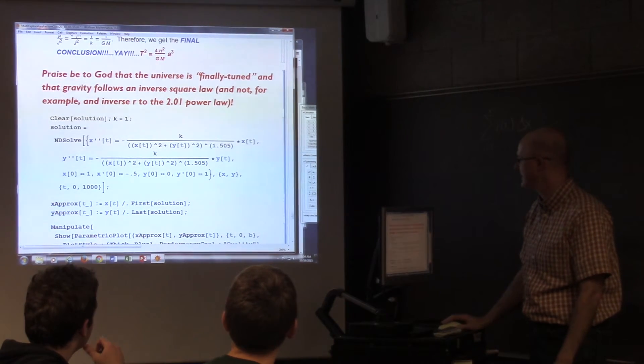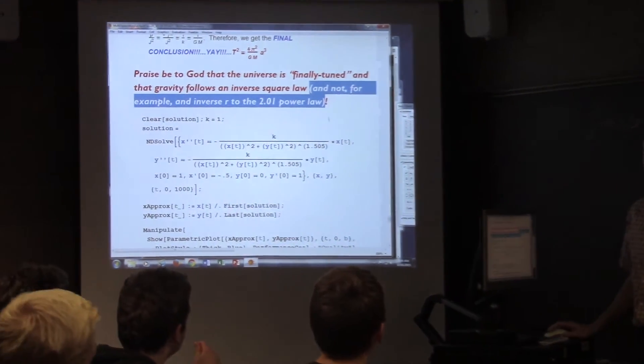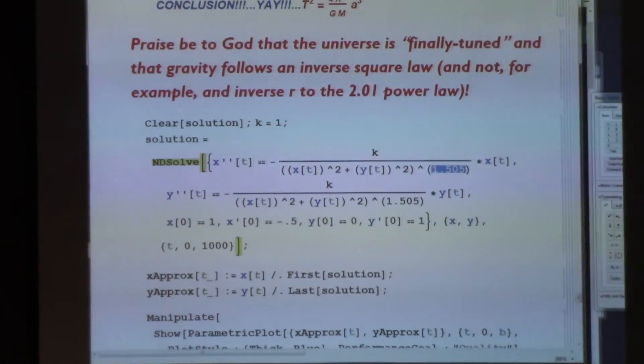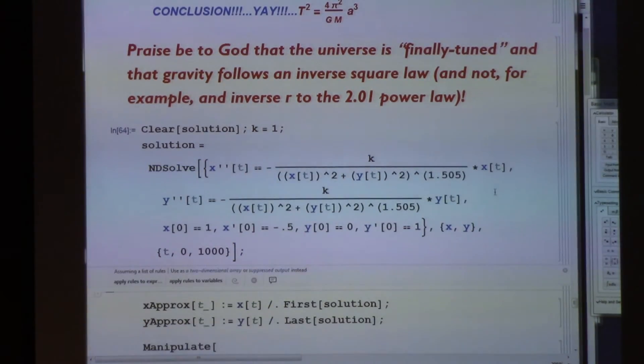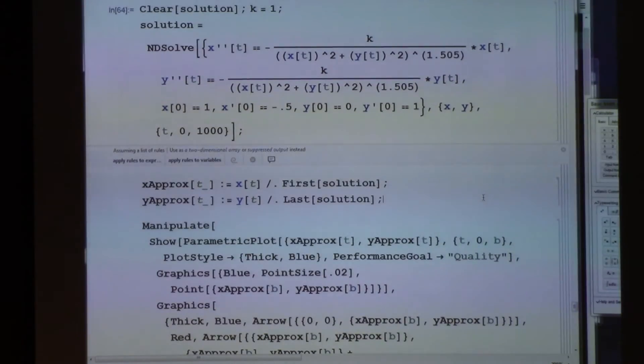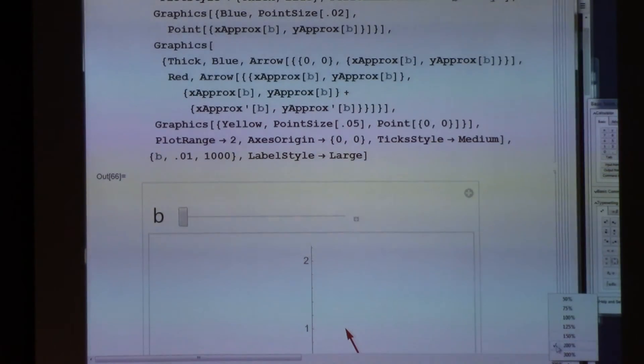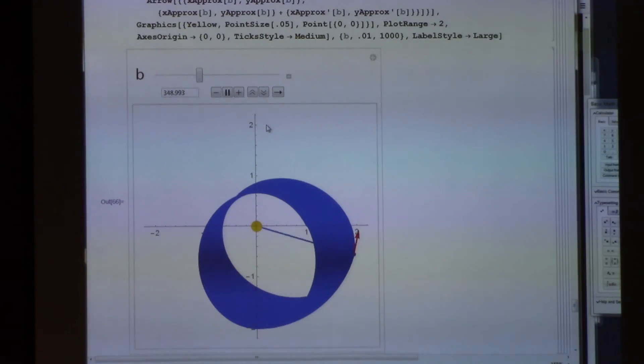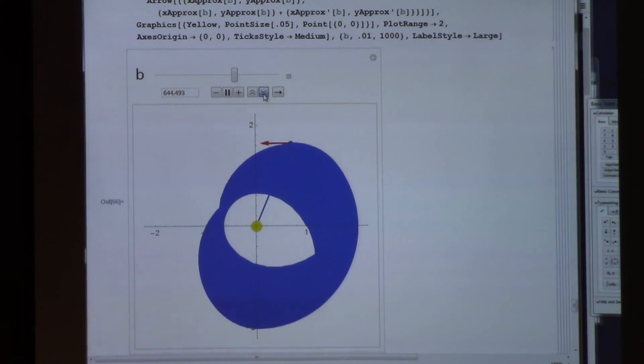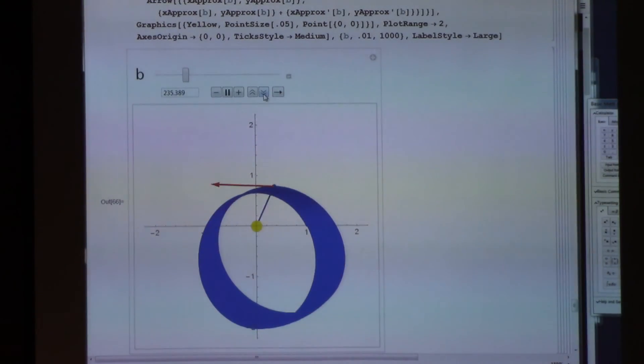And because it's good that gravity follows an inverse square law and not, for example, an inverse r to the 2.01 power law. Because what happens in such a situation? Notice, instead of 1.5 beta, I have 1.05, 1.505. What happens if it was an inverse r to the 2.01 power law? Well, let's just say we wouldn't live anymore because the orbit is not so nice anymore. And that's not numerical error. So we would not be able to survive. The fact that it's an inverse square law exactly is important for life. It's finely tuned.